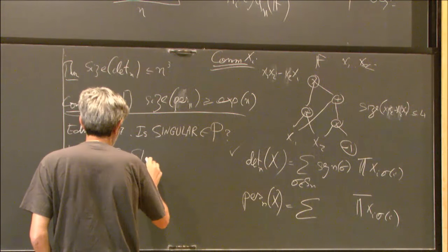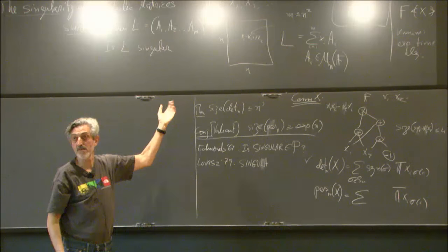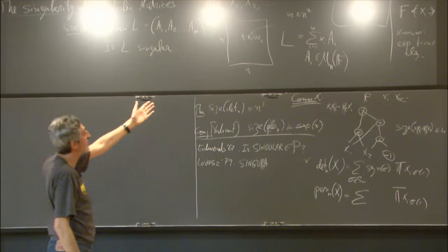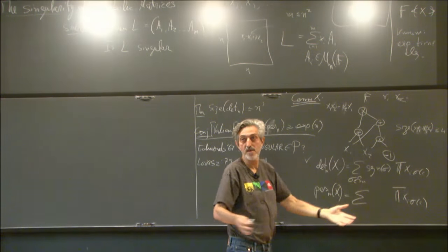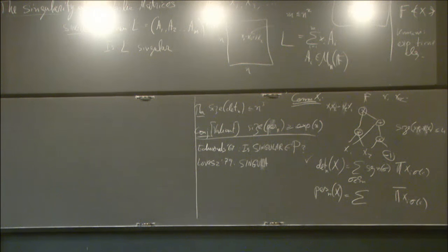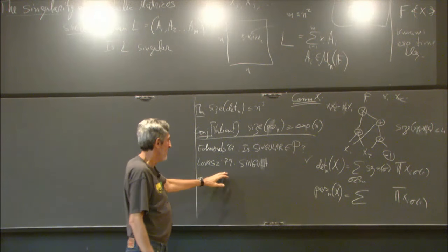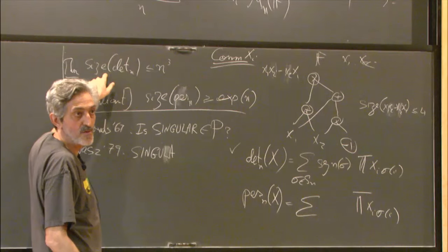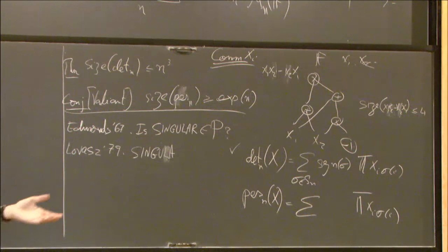Lovász essentially observed that if you allow randomness — if you allow your algorithm to toss coins — you can solve it. Singular, this problem of whether a symbolic matrix is invertible — why can't you just compute the determinant? Because this is a symbolic computation and it would have exponentially many terms.